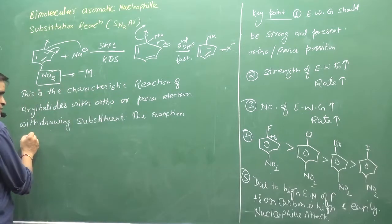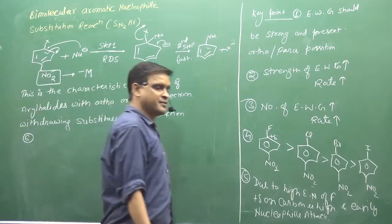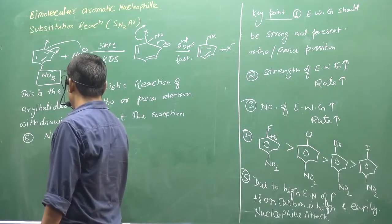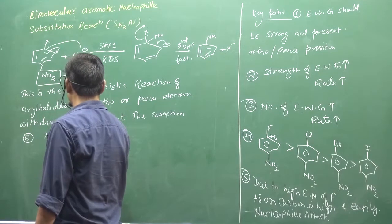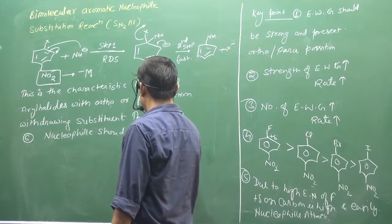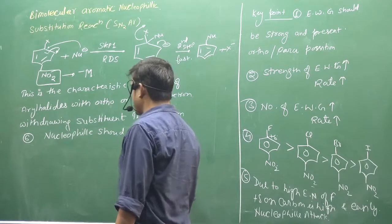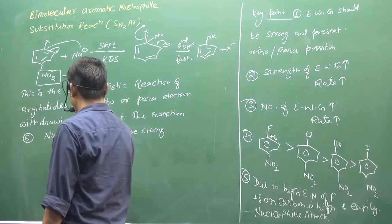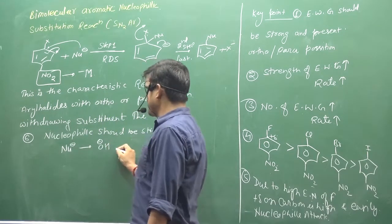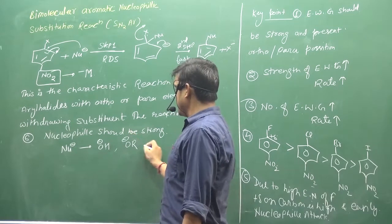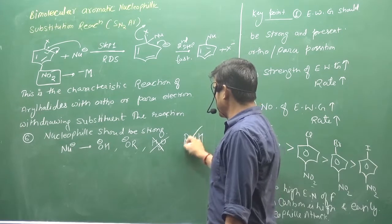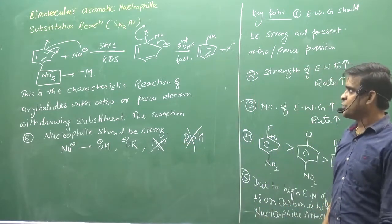One more point: the nucleophile should be strong. A weak nucleophile is not going to work. For example, you may have OH minus or OR minus as nucleophiles. H2O - do not use at all. It is a weak nucleophile. Weak nucleophiles will not let SN2AR happen. Only OH minus or RO minus will work.